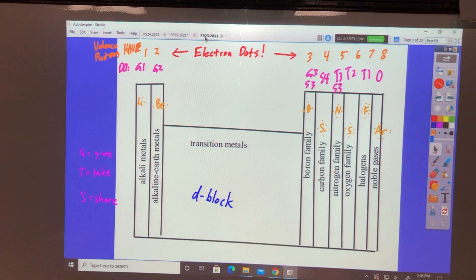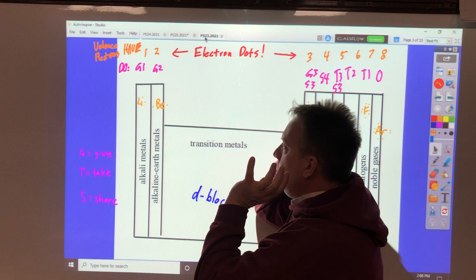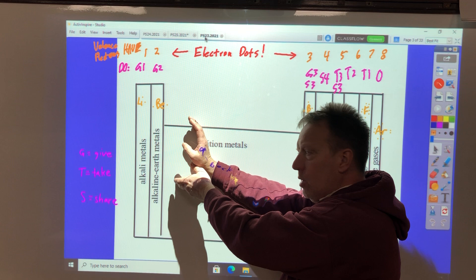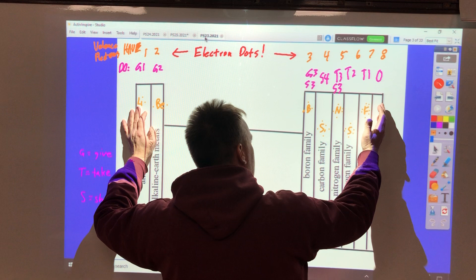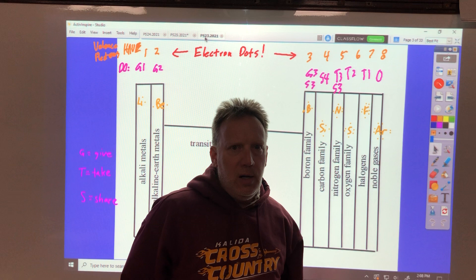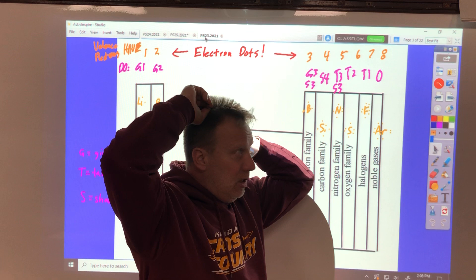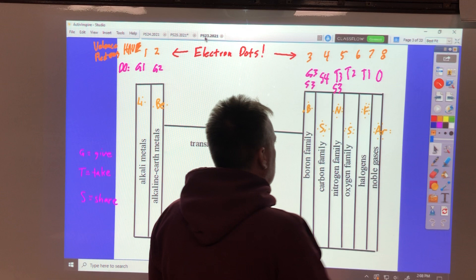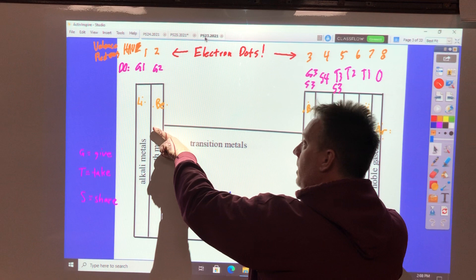One of three outcomes will happen when you put elements from the periodic table together. You will either get two metals to bond and get an alloy like you did with the bronze bell, or you'll get a metal combined with a non-metal and get some sort of a salt, an ionic compound, or you'll get two non-metals to combine and you'll end up with a molecule.